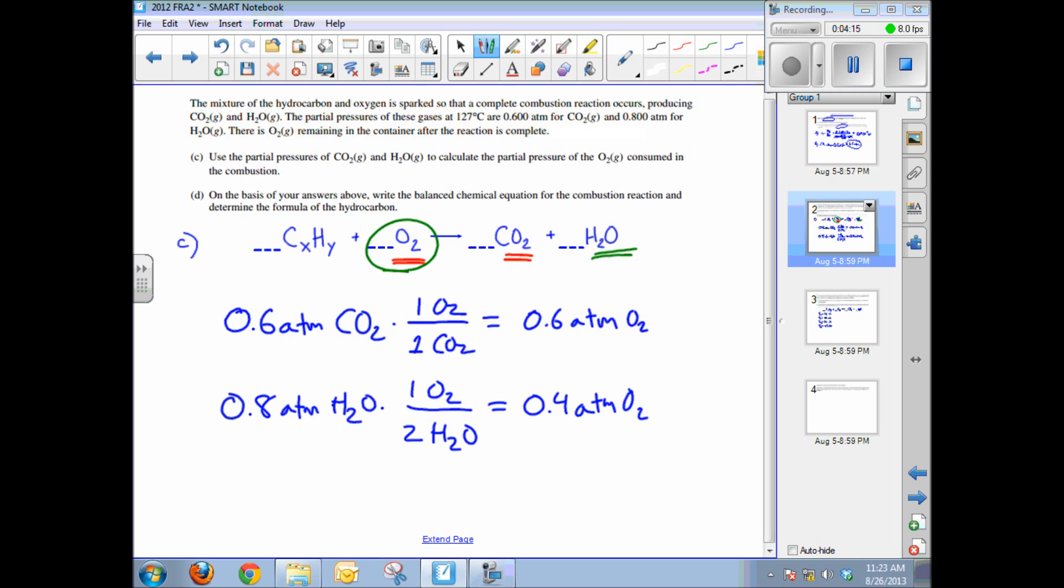So both of these are oxygen. So the sum total of the partial pressure of oxygen is 1.0 atmospheres of O2. And that's the answer for that part.